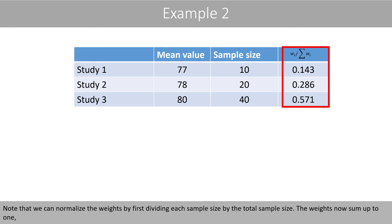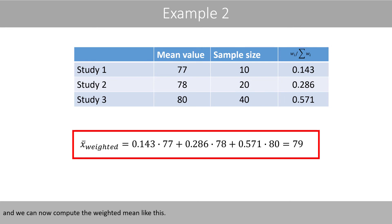Note that we can normalize the weights by first dividing each sample size by the total sample size. The weights now sum up to 1, and we can compute the weighted mean directly without dividing by the sum of the weights.